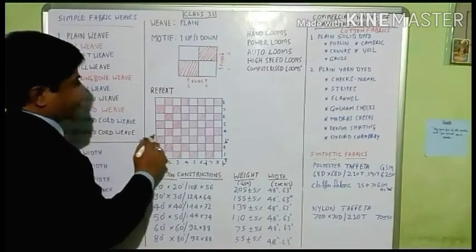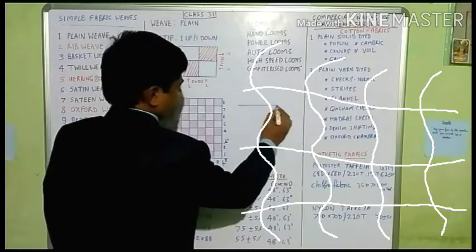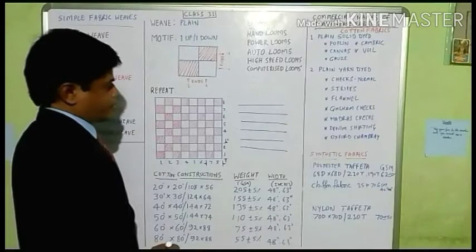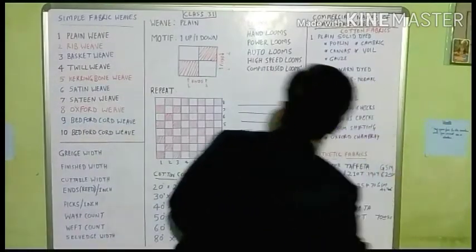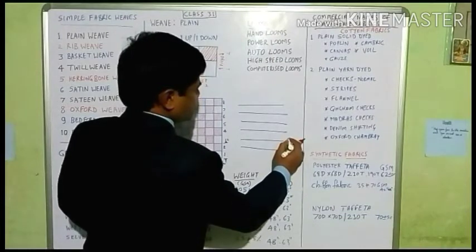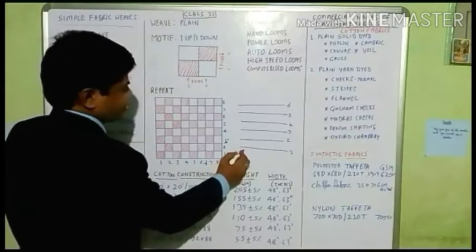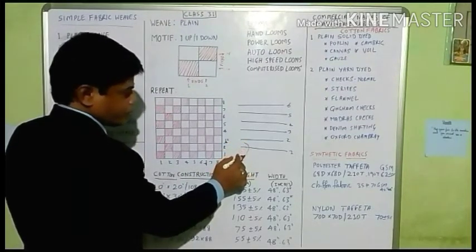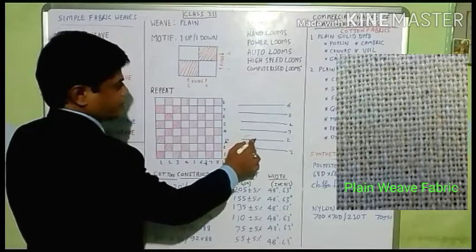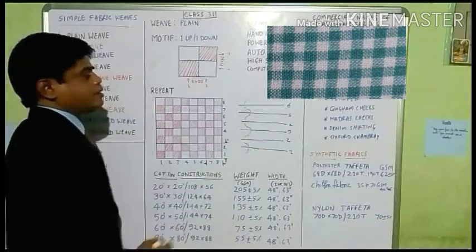See, whatever this weft is — there is up and down: 1 up, 1 down. For your information, suppose this is the warp end and these are the widthwise yarns, that is weft yarns. The first warp thread is going up — it is floating up of the first thread, down of the second thread, up of the third thread, down of the fourth thread, up of the fifth thread, and down of the sixth thread.